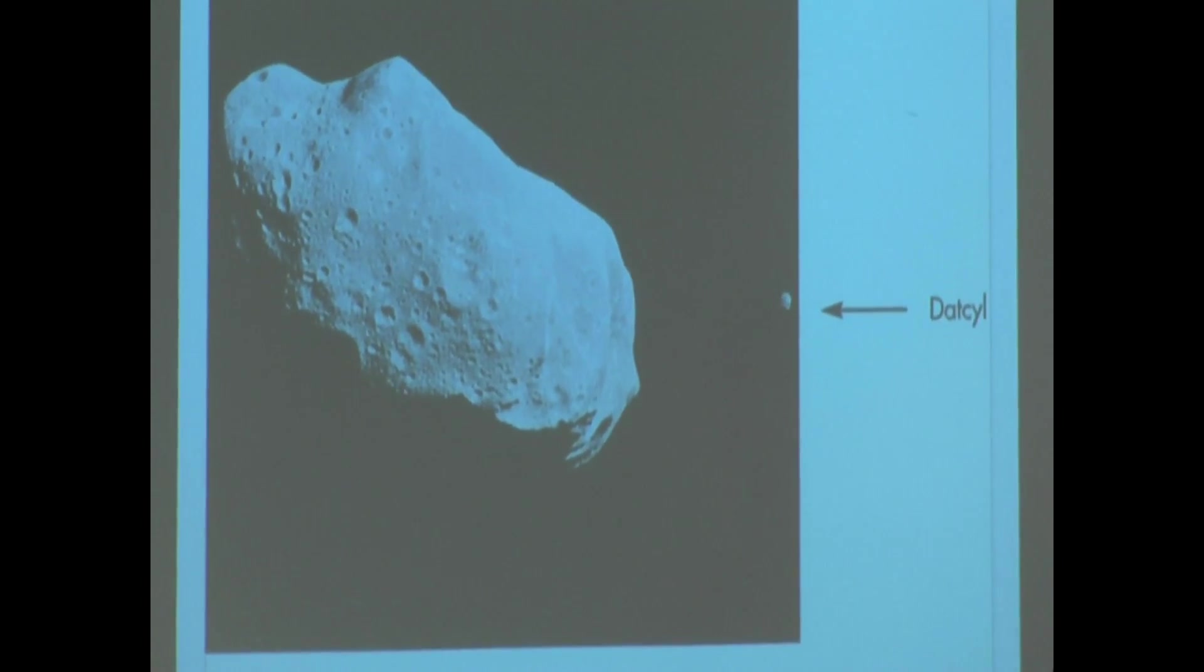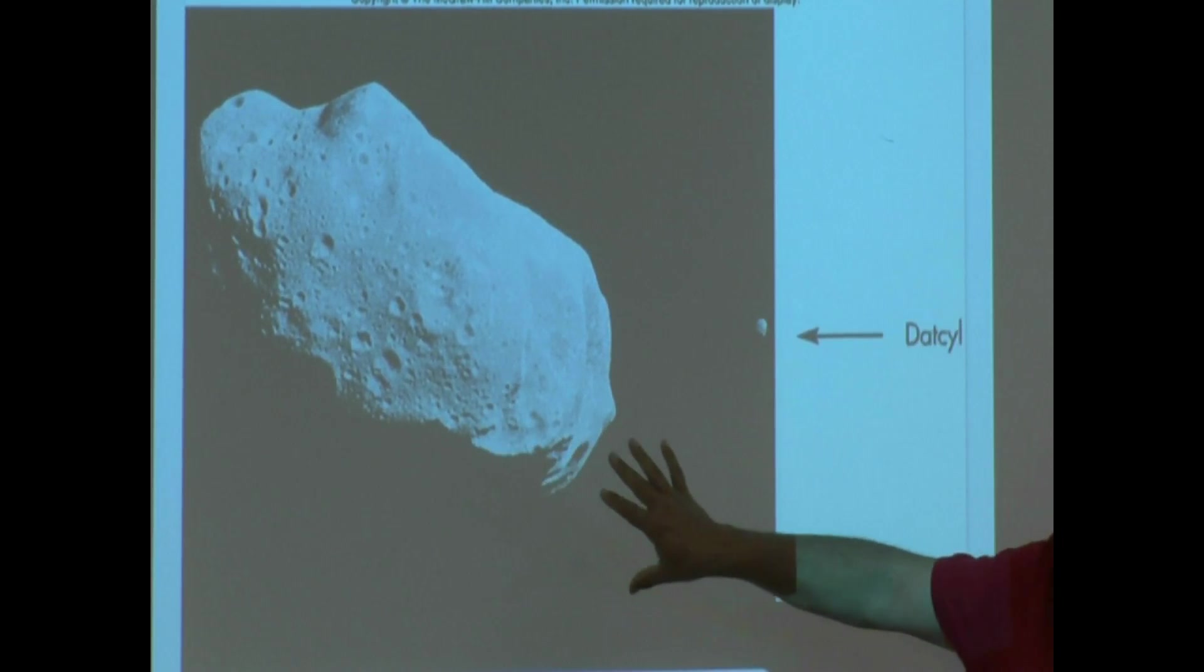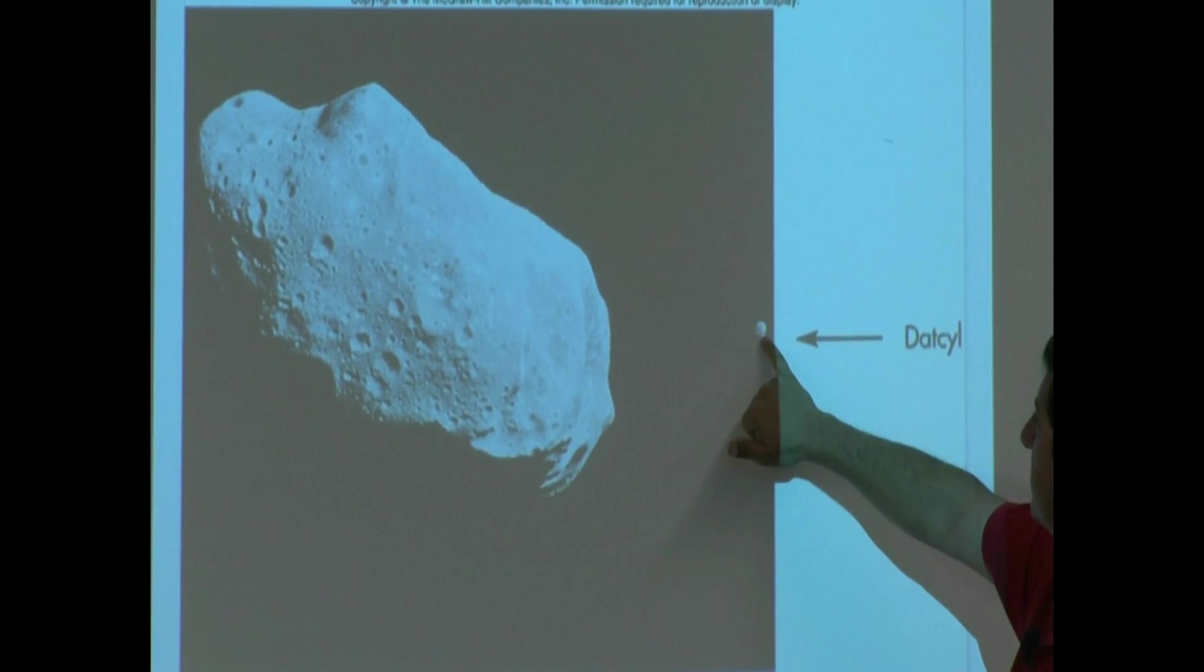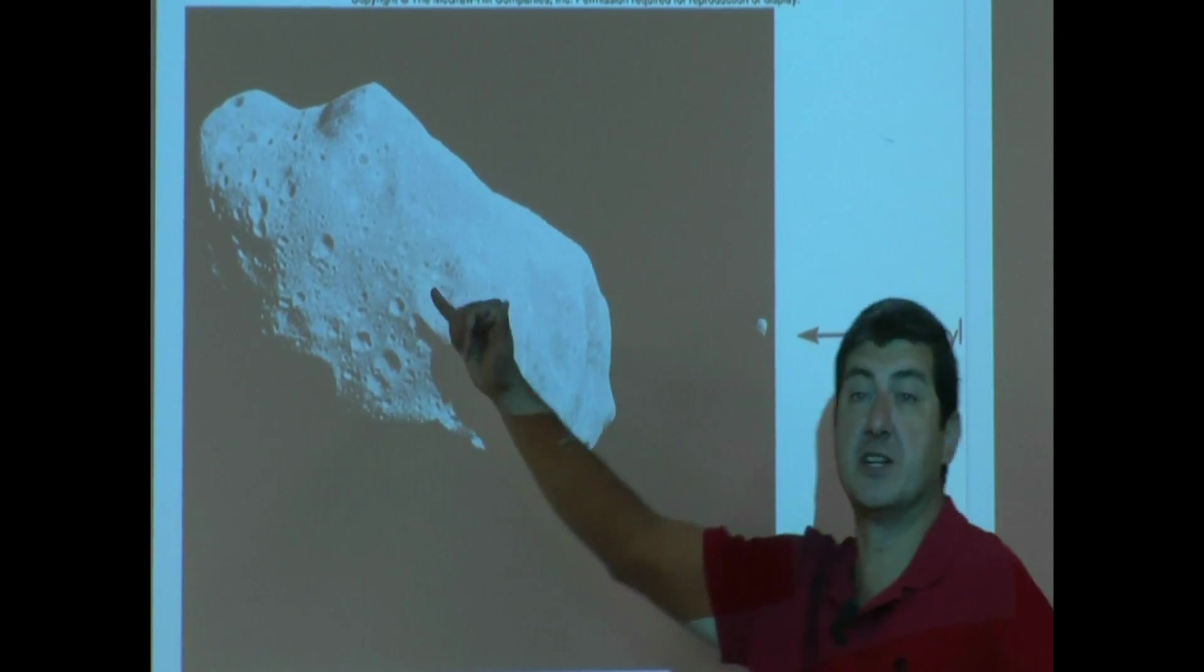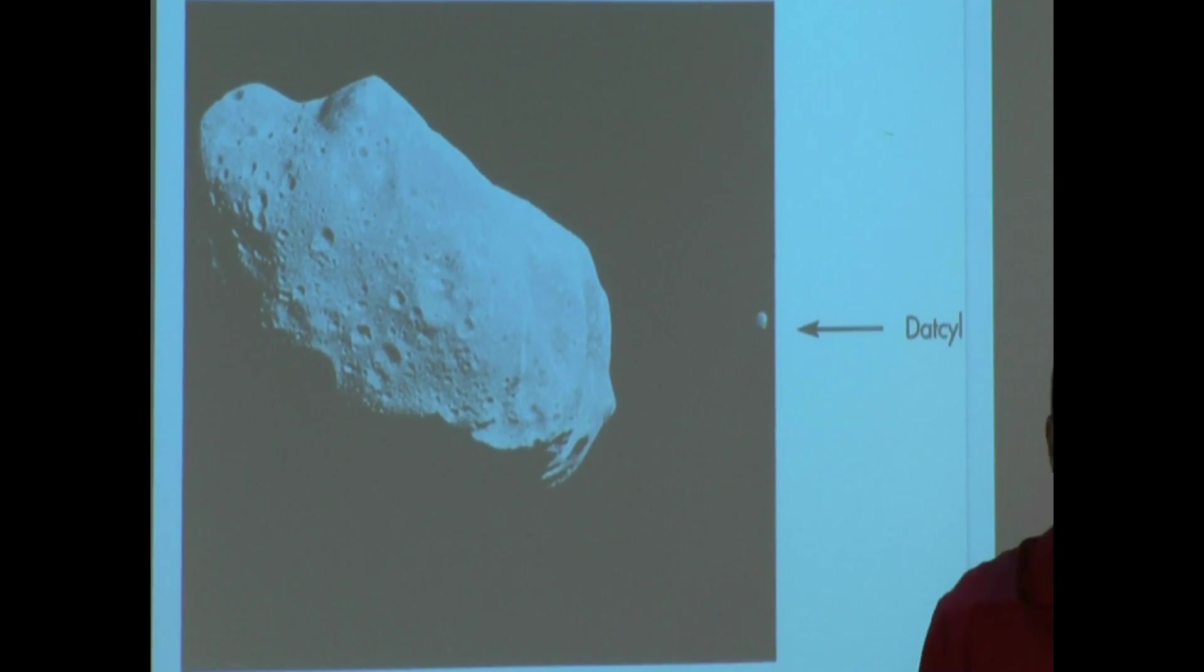This is the one that I was saying. Ida is the asteroid. It itself isn't that big, 15 kilometers or something, but the dactyl is this one. It has its own moon. The moon is going around the asteroid, just like a regular moon goes around the planet. So, amazing.